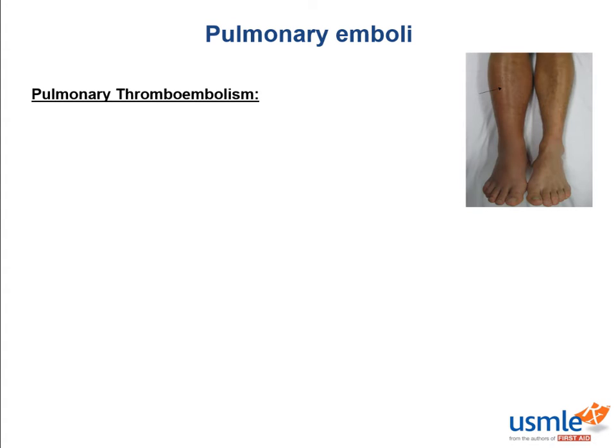Although most DVTs occur in the calf, these don't always embolize. The most common site of embolization to the lungs is from the proximal iliofemoral veins. The risk factors for PE and DVT are centered around Virchow's triad: stasis of blood flow, endothelial damage, and hypercoagulability.